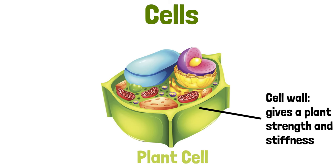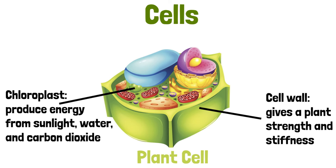Another part of the plant cell that is not found in an animal cell is the chloroplast. Chloroplasts help plant cells produce energy. Chloroplasts use water, carbon dioxide, and light from the sun to create a type of sugar known as glucose. Glucose acts as food for a plant.